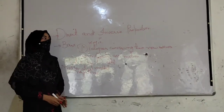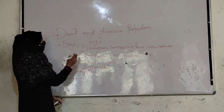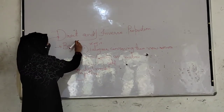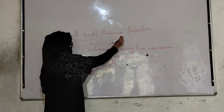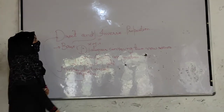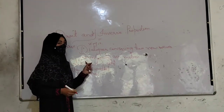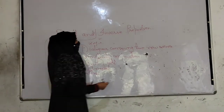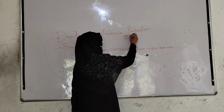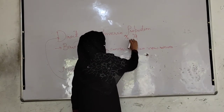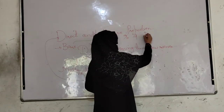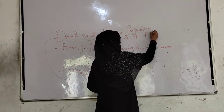Here we go on our topic: direct and inverse proportion. We can divide this topic into direct proportion and inverse proportion. Proportion means that two quantities a divided by b and c divided by d are said to be in proportion if a divided by b is equal to c divided by d.